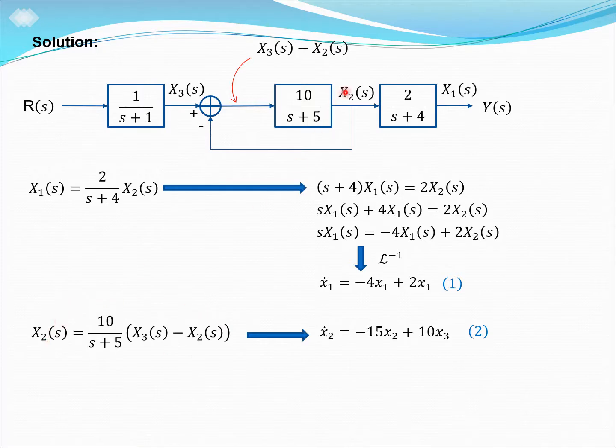So, for x2s, we multiply 10 over s plus 5 with x3 minus x2, and after we solve this equation, then we are going to get the second state space equation: x2 prime equals to minus 15x2 plus 10x3.